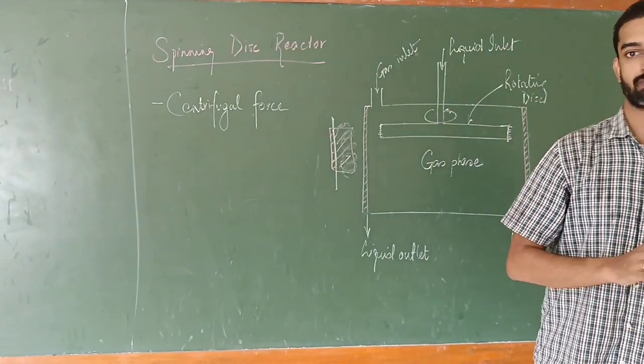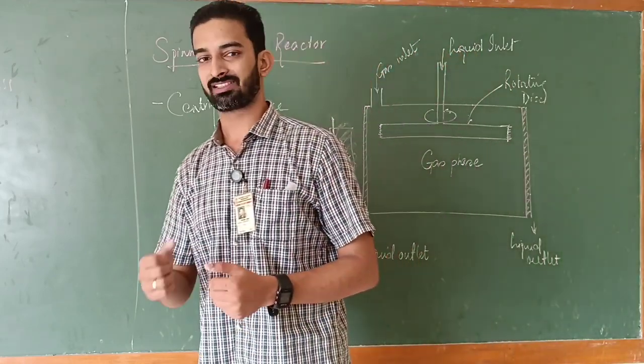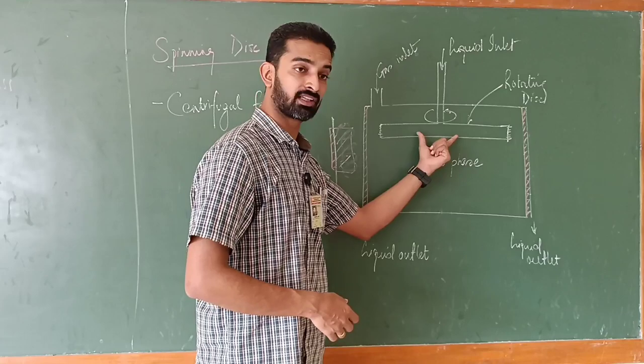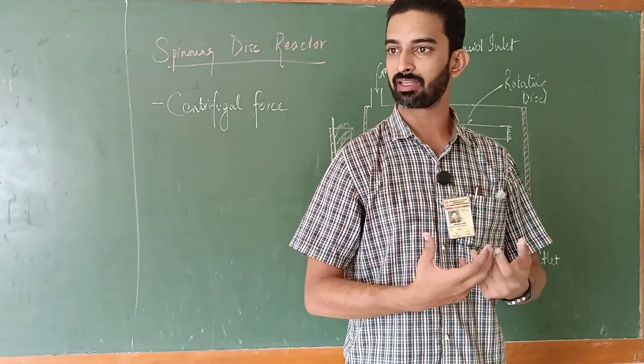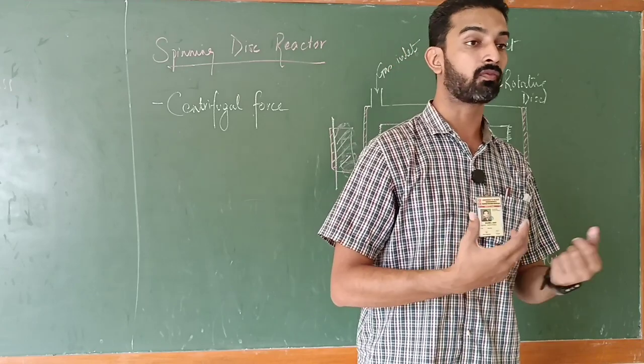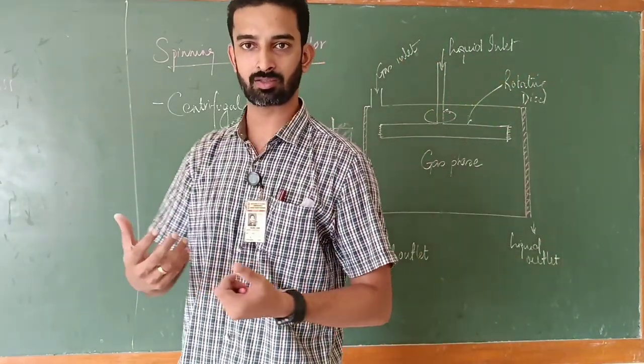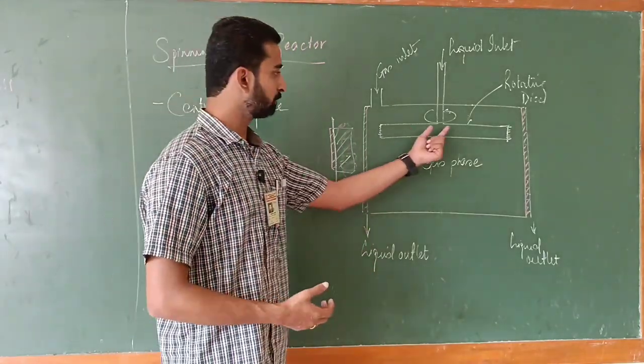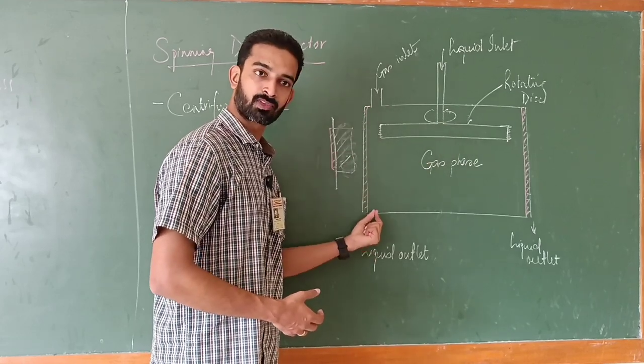You require maximum or best possible contact for heat transfer. But when you are using normally a cylinder, the contact or the surface area between the liquid or the heating medium or cooling medium and the fluid, the processed fluid, is relatively very less. But in this case, because it is discharging the liquid into a very thin film, the contact time is also relatively less.